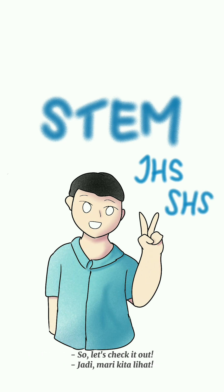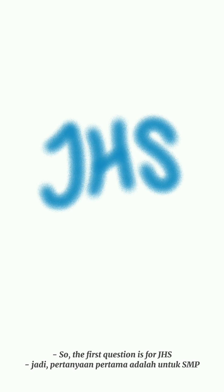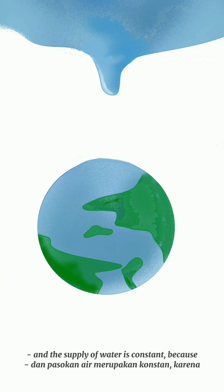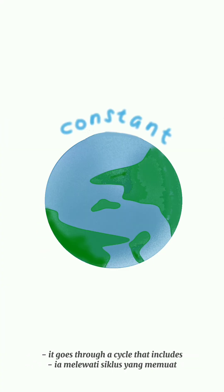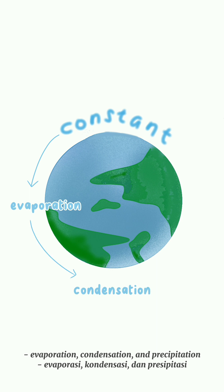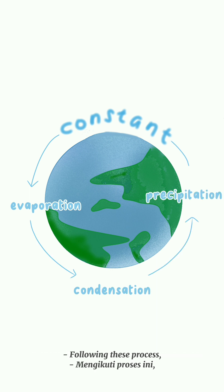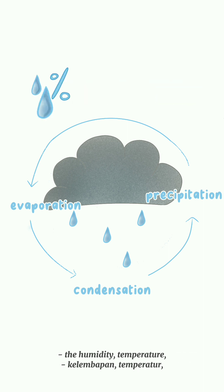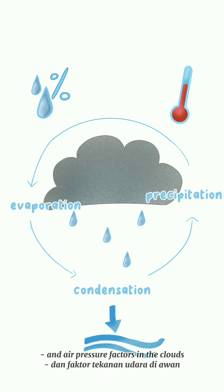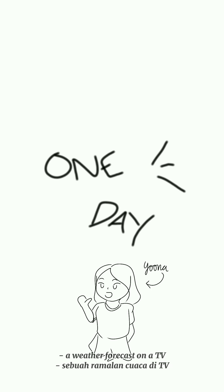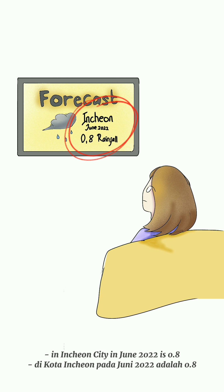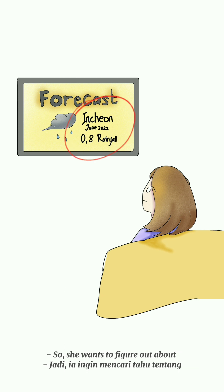The first question is for junior high school and it is about probability. Water is one of the most important elements on earth, and the supply of water is constant because it goes through a cycle that includes evaporation, condensation, and precipitation. Rain water can be predicted by examining humidity, temperature, and air pressure factors in the clouds. One day, Yuna saw a weather forecast on TV stating that the probability of rainfall in Enchant City in June 2022 is 0.8.